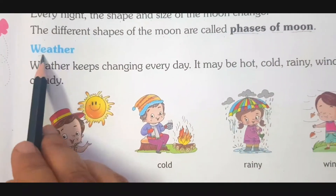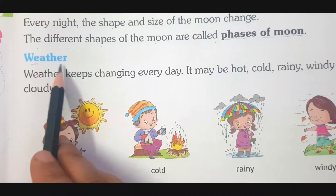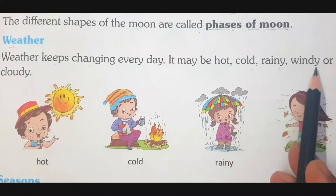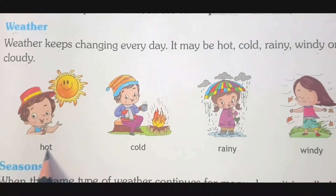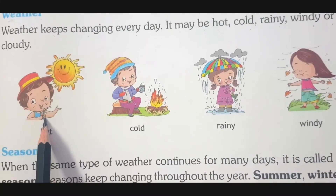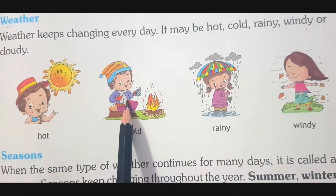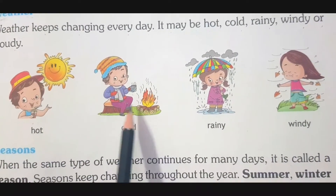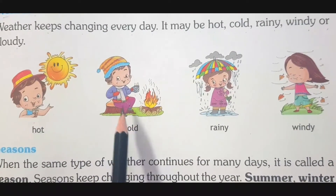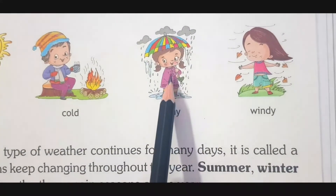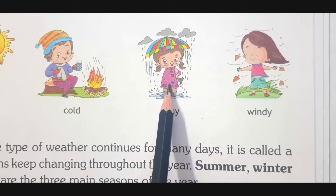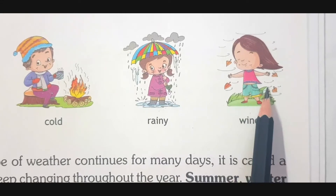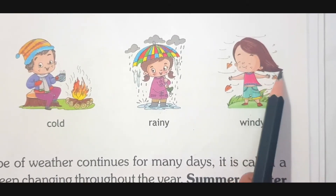Next we are going to read about weather, children. You have already learned about weather. Weather keeps changing every day, from time to time. It may be hot, cold, rainy, windy or cloudy. Look here — it is hot, so the boy is drinking a cool drink. Here the weather is cold, so the boy is drinking hot tea or coffee or hot milk, sitting beside the fire and wearing woollen clothes to keep warm. Here the weather is rainy — the girl is holding an umbrella and wearing a raincoat. Here the weather is windy — the air is blowing very fast, all the leaves are falling from the trees and the girl's hair is blowing.